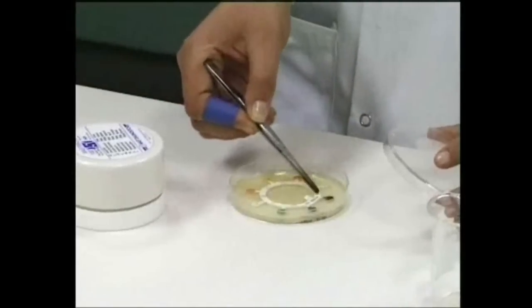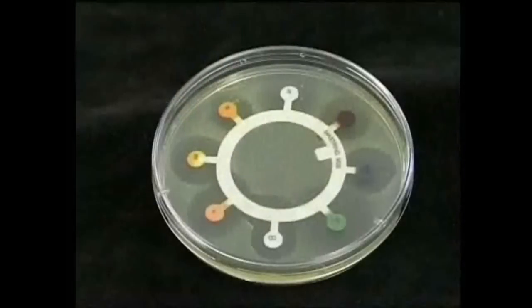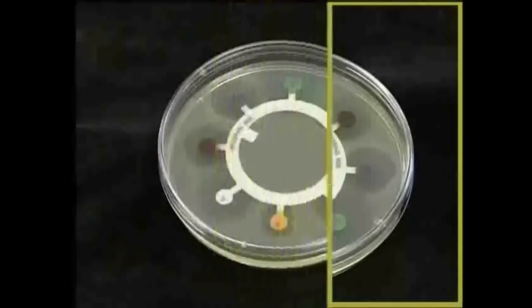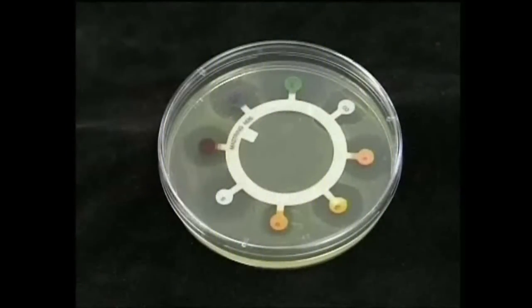Multi-discs can also be used to show inhibition of bacterial growth due to the presence of antibiotics. These are filter paper discs with a number of different antibiotics placed on spots around the edges of the discs. These are placed onto a bacterial lawn and again, inhibition by antibiotics is indicated by a clear zone. Multi-discs are useful as they allow the testing of more than one antibiotic for antimicrobial properties.